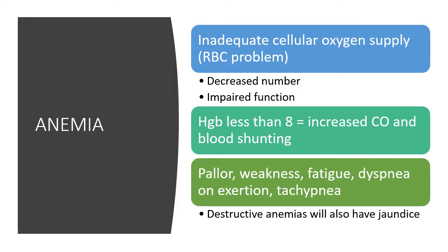The key difference with destructive anemias — the hemolytic anemias like thalassemia and sickle cell anemia — is that they also present with jaundice from increased red blood cell destruction, which causes a rise in serum bilirubin. In children especially, the immature liver can't keep up with converting all that bilirubin to bile, resulting in the yellow discoloration we call jaundice.